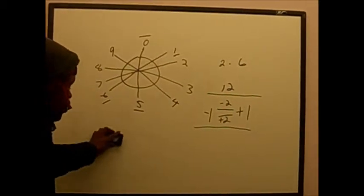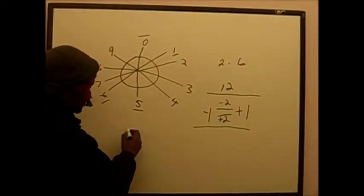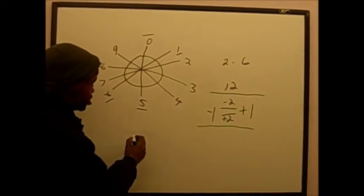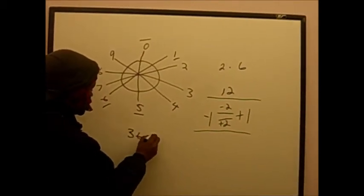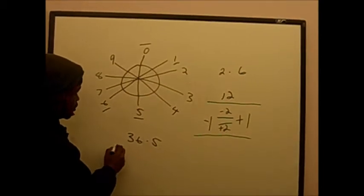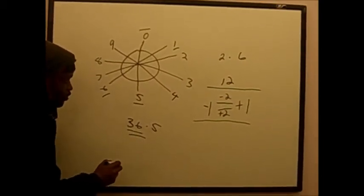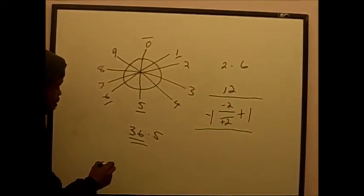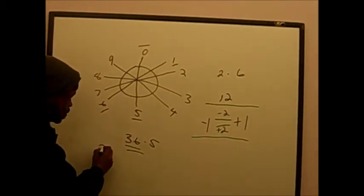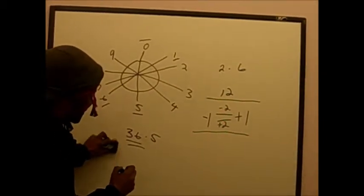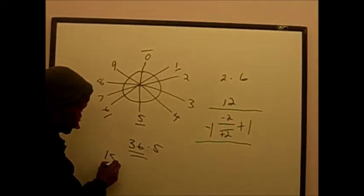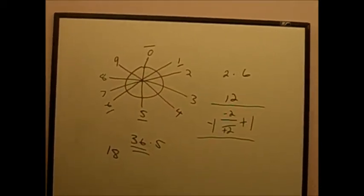Or if we do for instance, like I did thirty-six times five. Thirty-six is the synergy, what's half of thirty-six? You got the twelve and a half, it's eighteen.